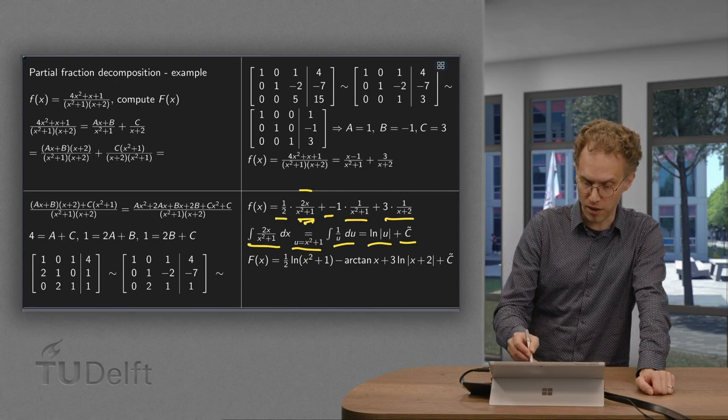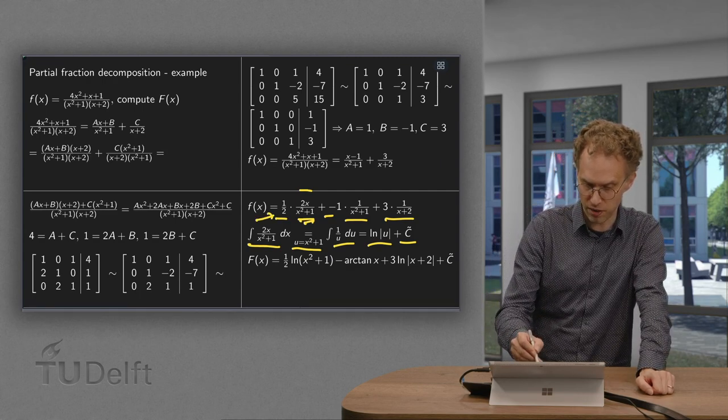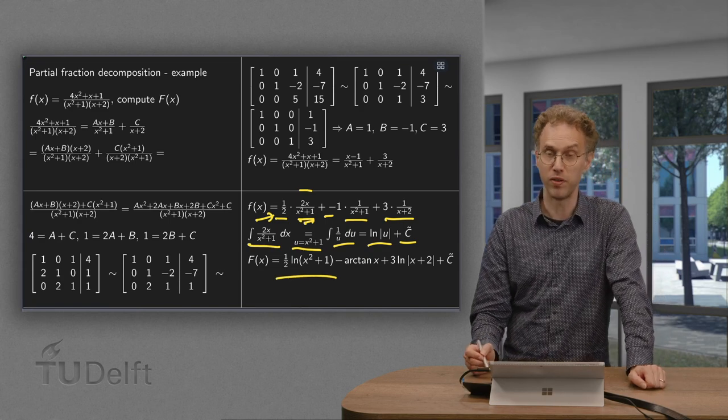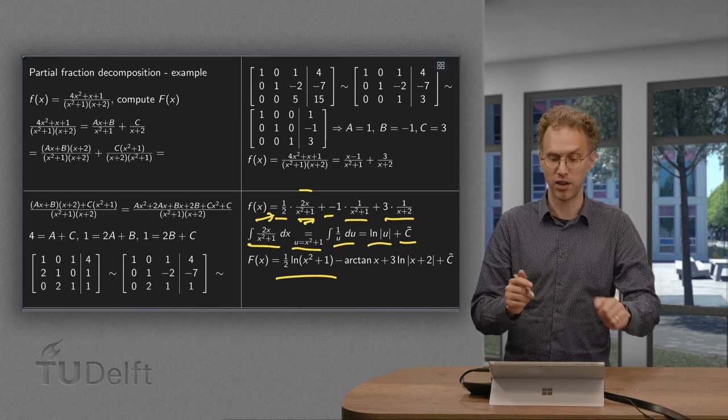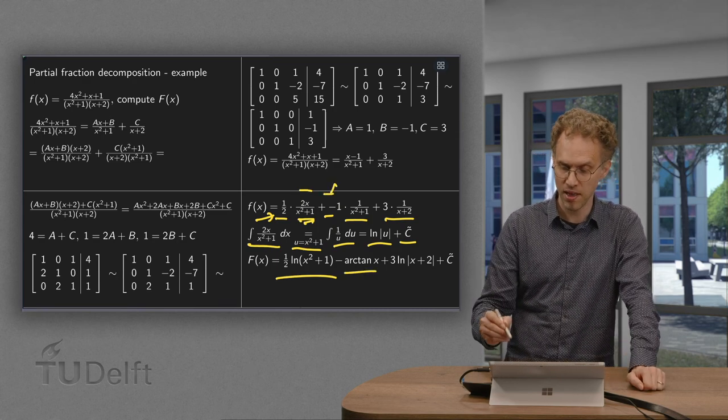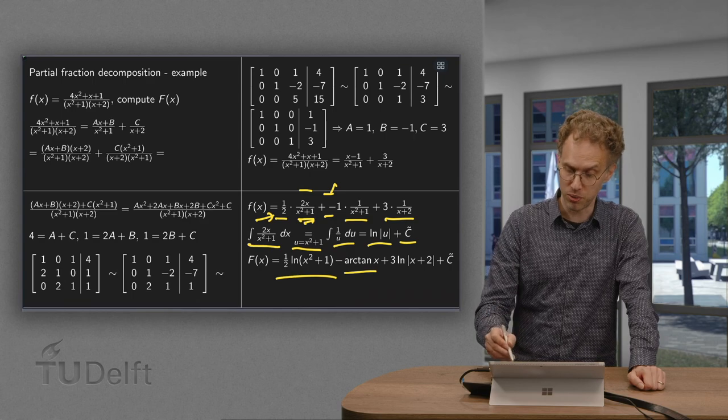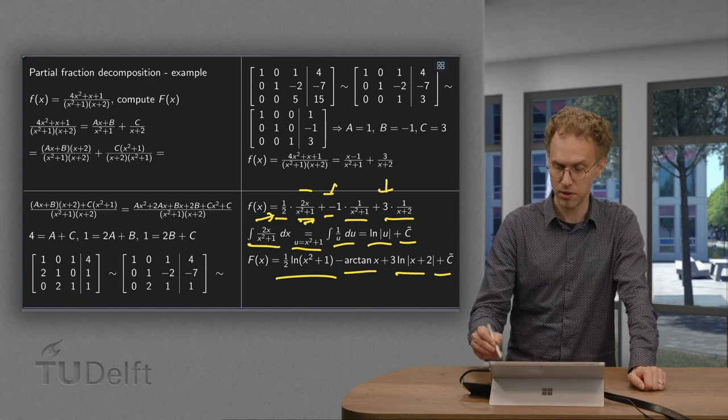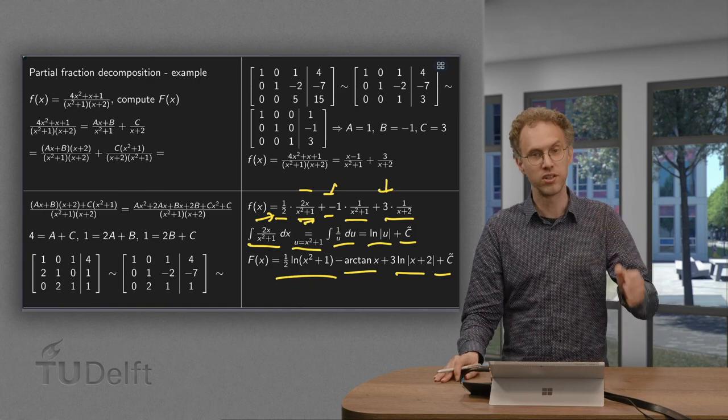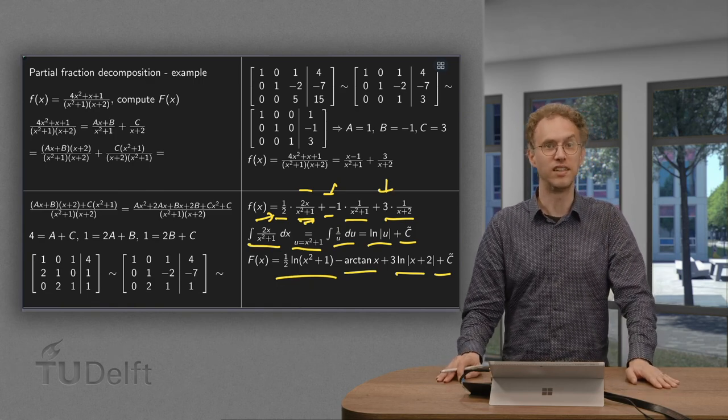We have 1 half times the ln of u, which is x squared plus 1. The 1 over x squared plus 1 gives us an arctan of x with the additional minus sign. And the 1 over x plus 2 gives us the ln of x plus 2 times a factor of 3. Plus some integration constant. So there you have your antiderivative.